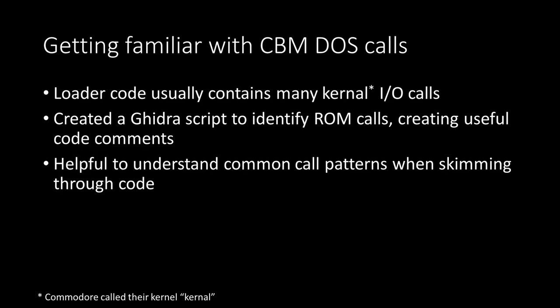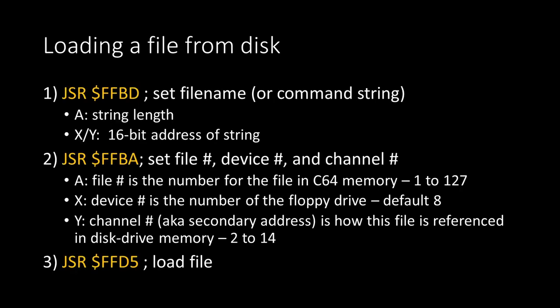Let's highlight the range we want to apply this to, go to scripts, run 'label addresses,' choose comment addresses, kernel ROM calls, BASIC ROM calls, and IO registers, do end-of-line description comments on operand addresses, and click OK. All of a sudden we have a bunch of documentation on the right. Looking over here, you can see there's lots of file IO — opening, closing channels, setting file names, doing stuff like that.